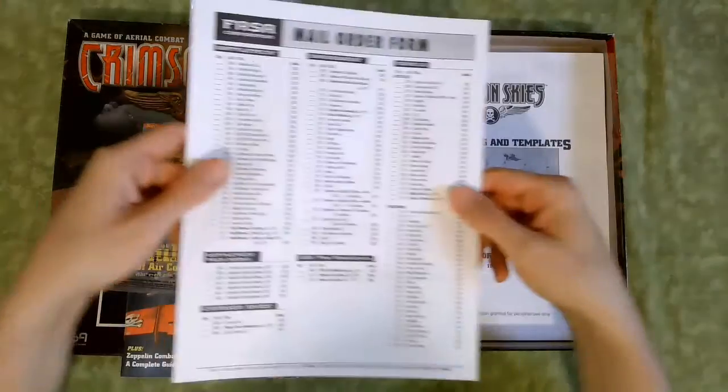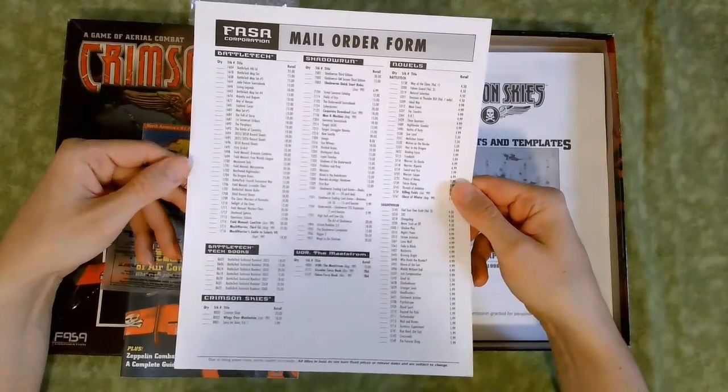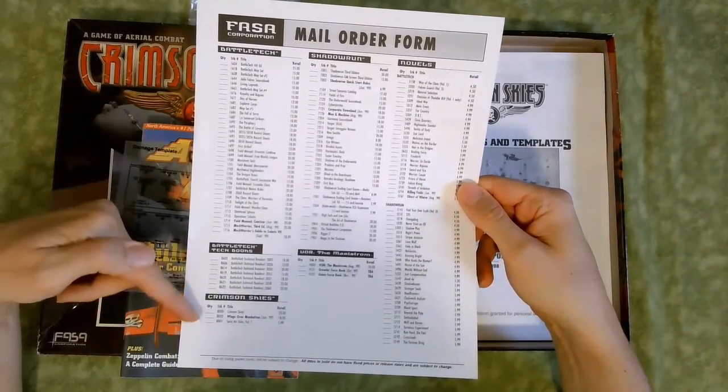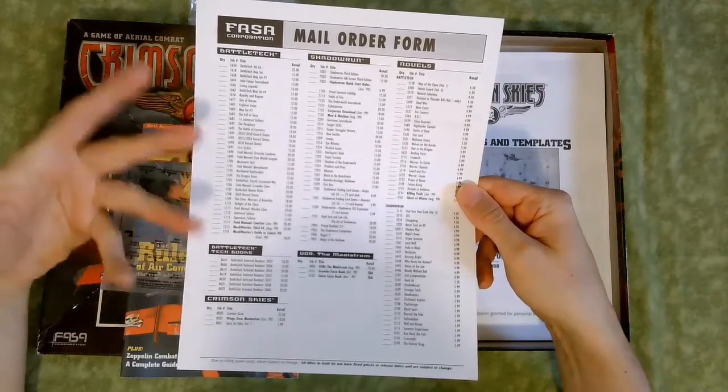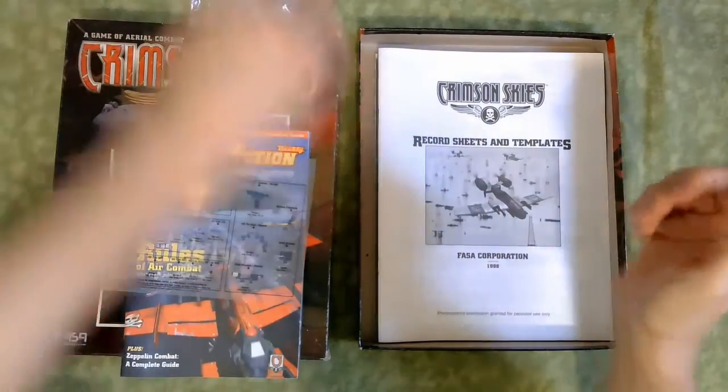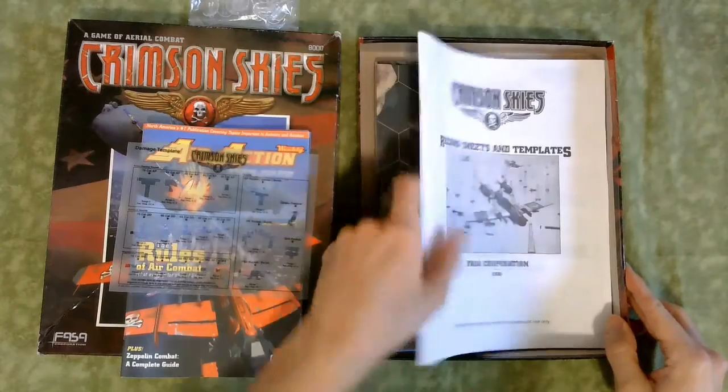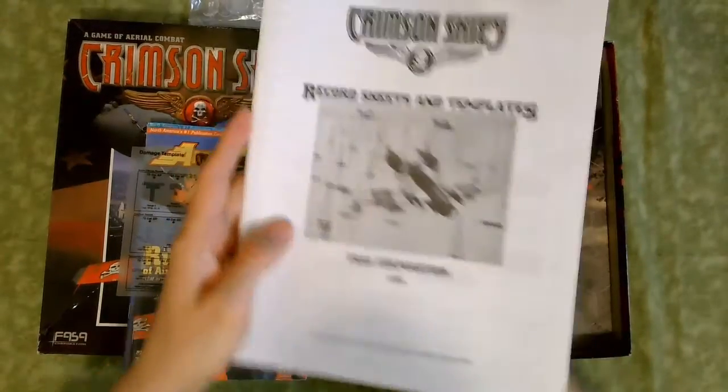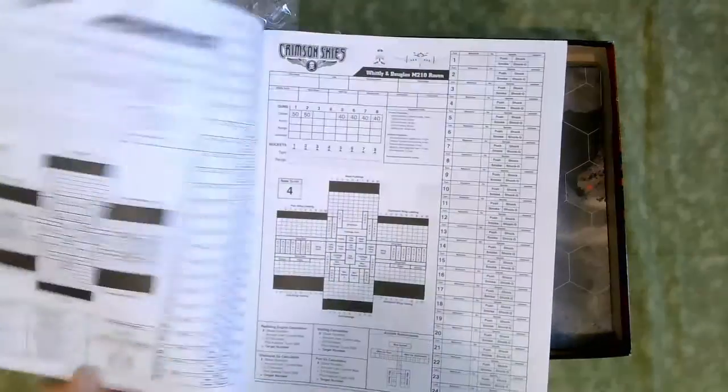Not a bad idea. Then, of course, it's fun to see the original FAFSA mail order form. A lot of BattleTech stuff. It only has three things for Crimson Skies, as you would expect. And then, of course, you have a box of record sheets and templates. This is what you play the game with.